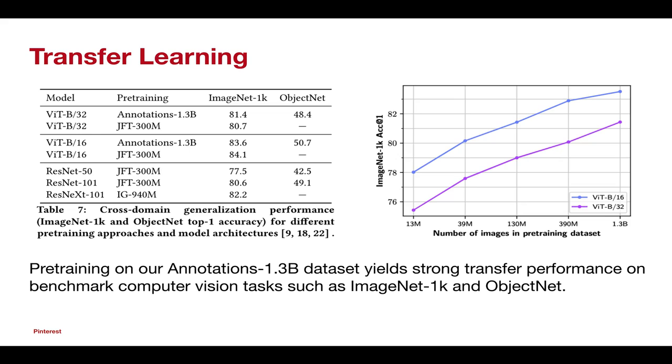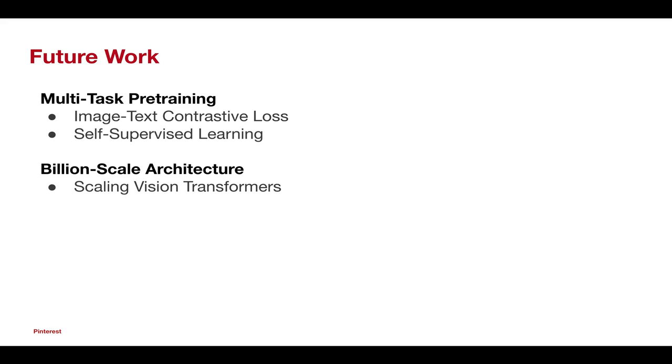We find that pre-training on our Annotations 1.3 Billion dataset yields strong transfer performance on benchmark computer vision tasks such as ImageNet and ObjectNet. Furthermore, the same relationship between dataset size and transfer performance is demonstrated on the classic ImageNet benchmark task.